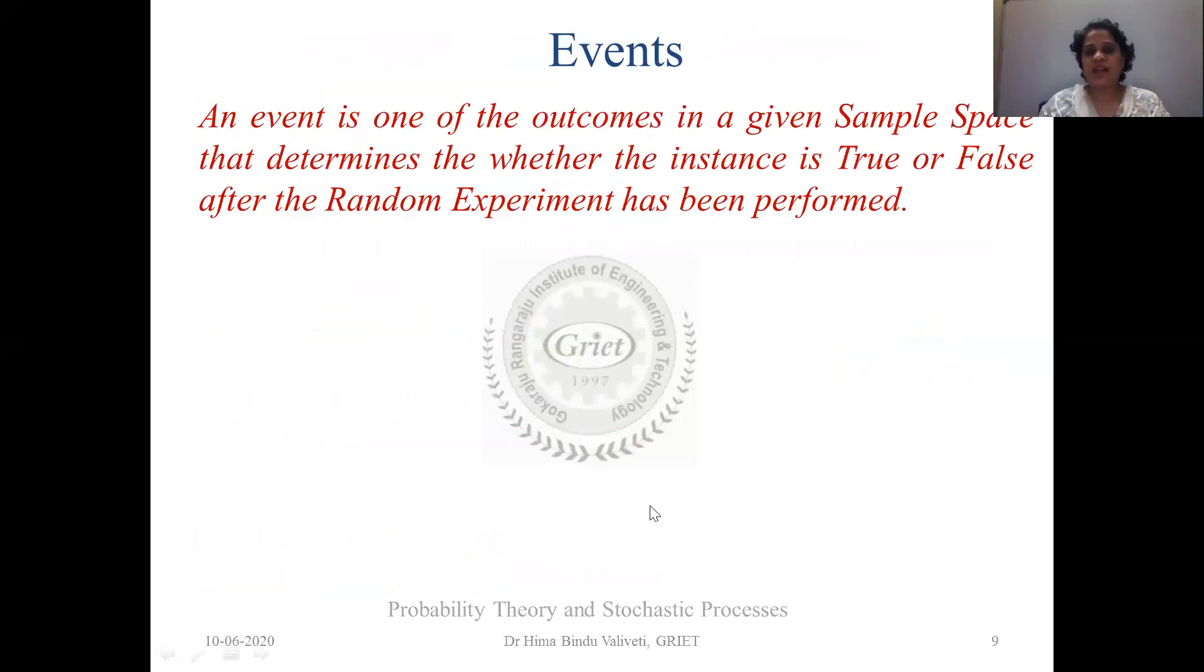So the last topic for the lesson one is event. So what is an event? We've seen what a sample space is, right? A sample space is where you have an accumulation of all the experiments that are done. We have seen what an experiment is. Experiment is something which you have to perform in nature. Now what is an event? So event is termed as one of the outcomes in a given sample space that determines whether the instance or whether the outcome is true or false after the random experiment has been performed. So whether the event being true or whether the event being false is what we want to know. So here, to be crisp, event is basically a subset of sample space.